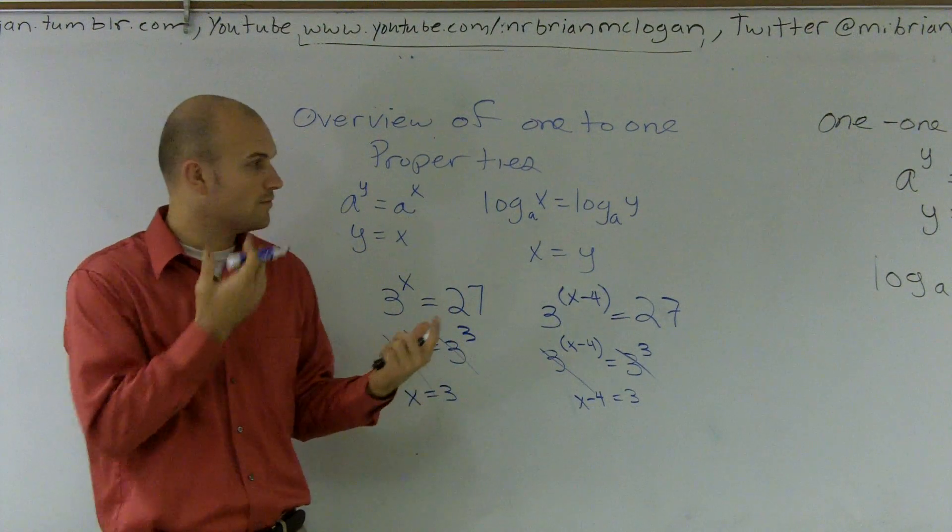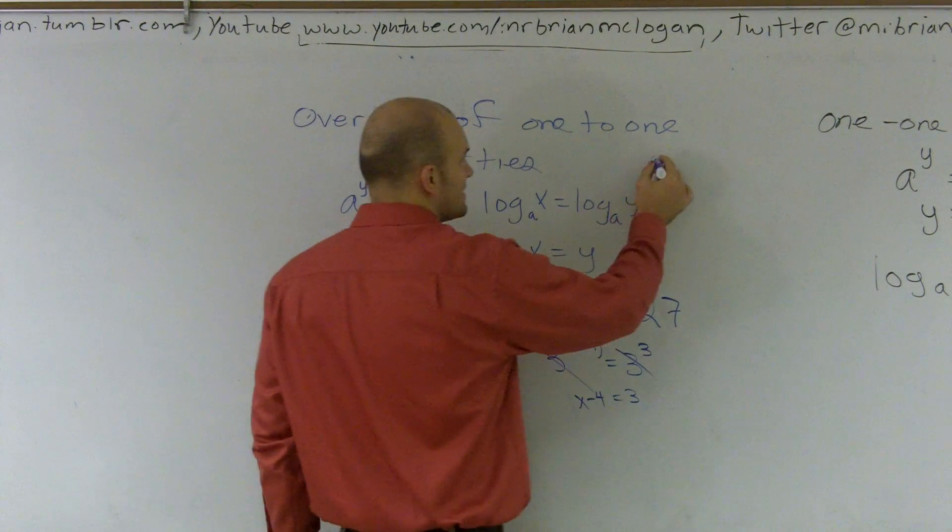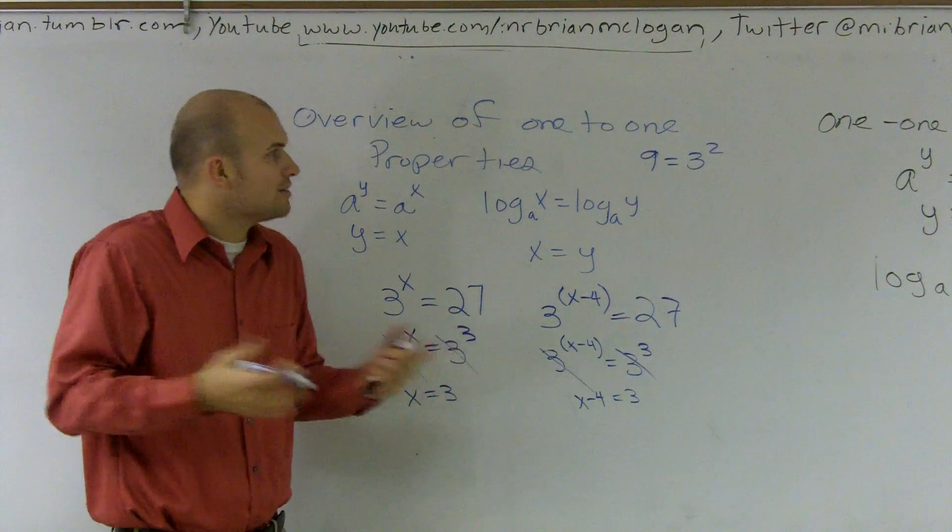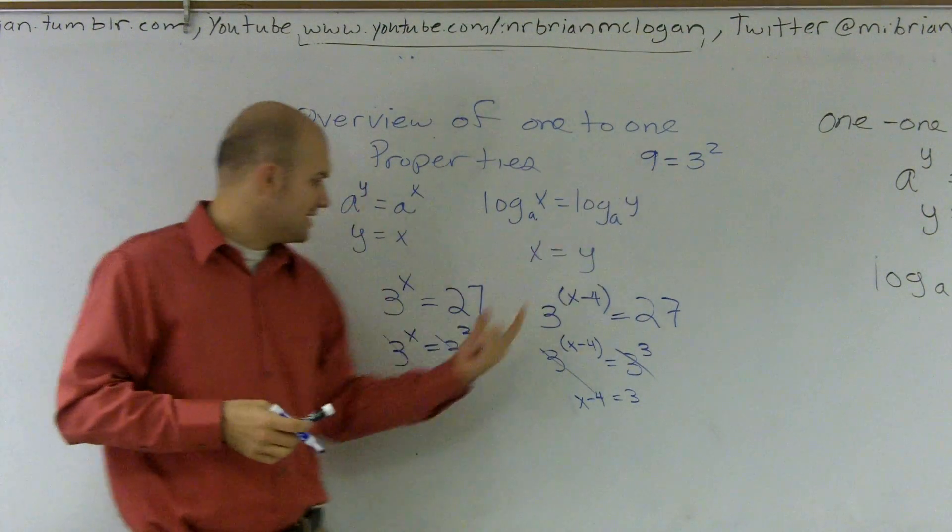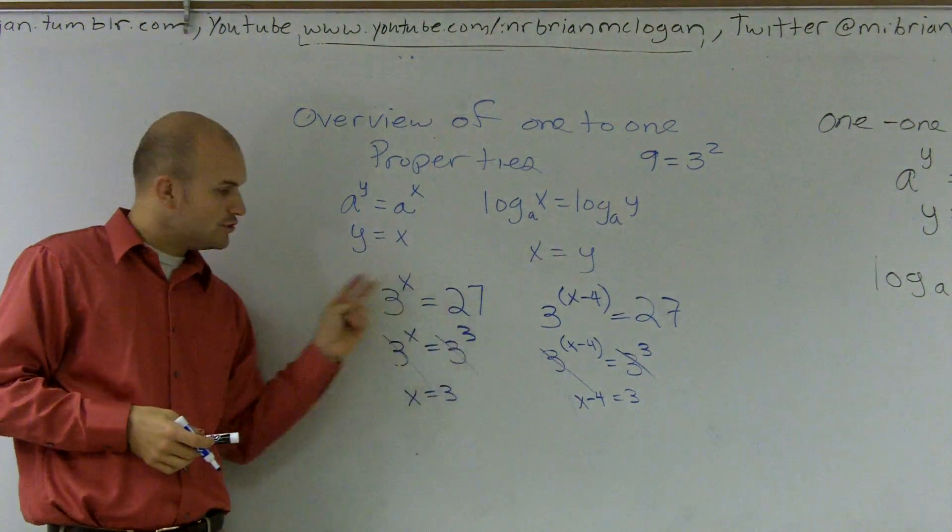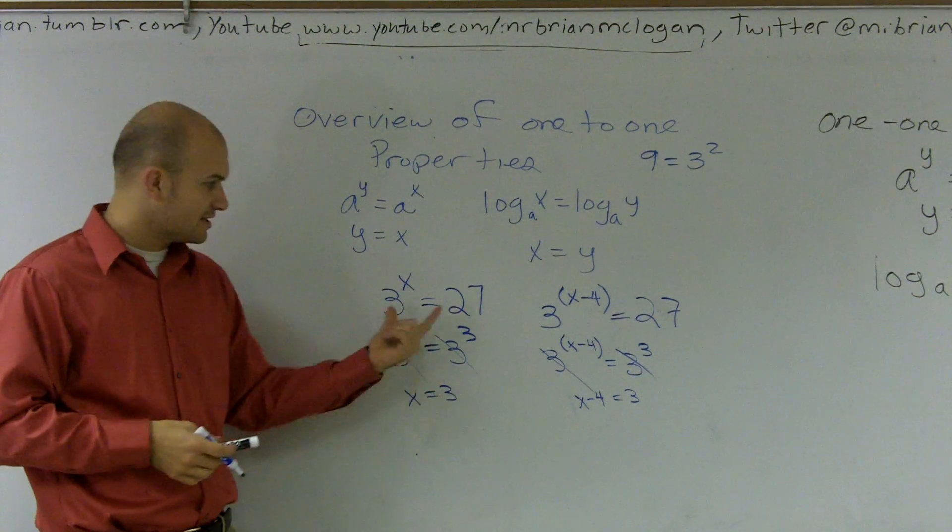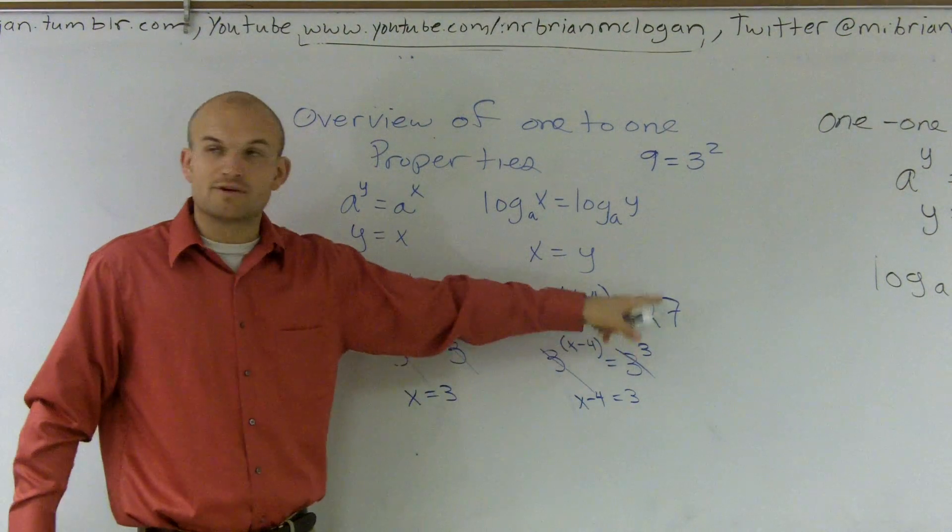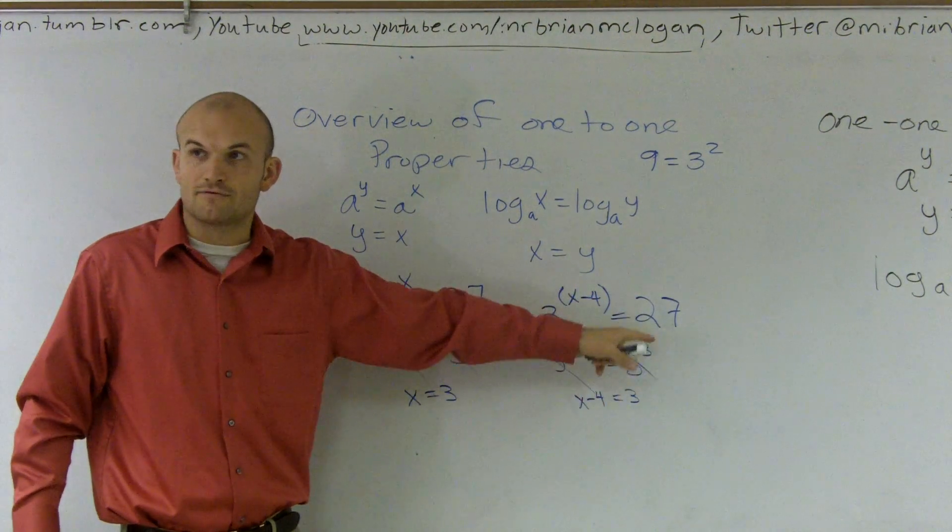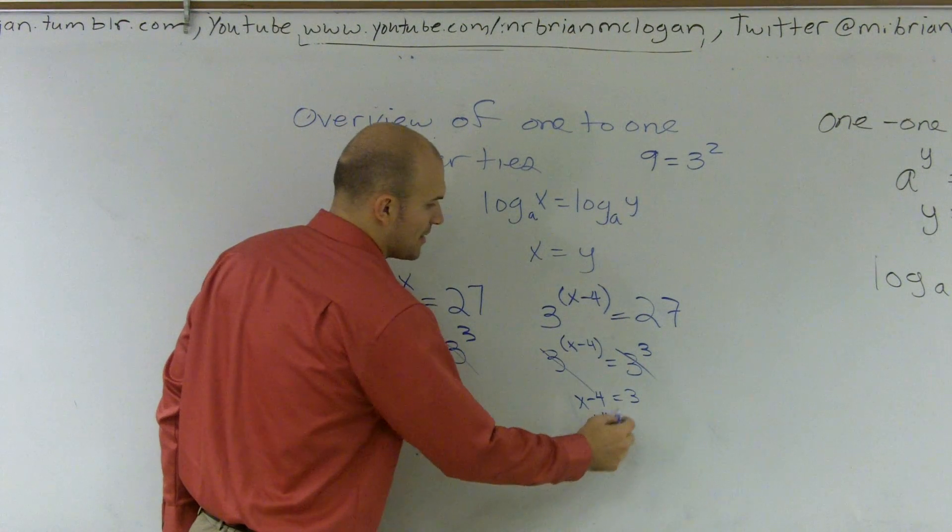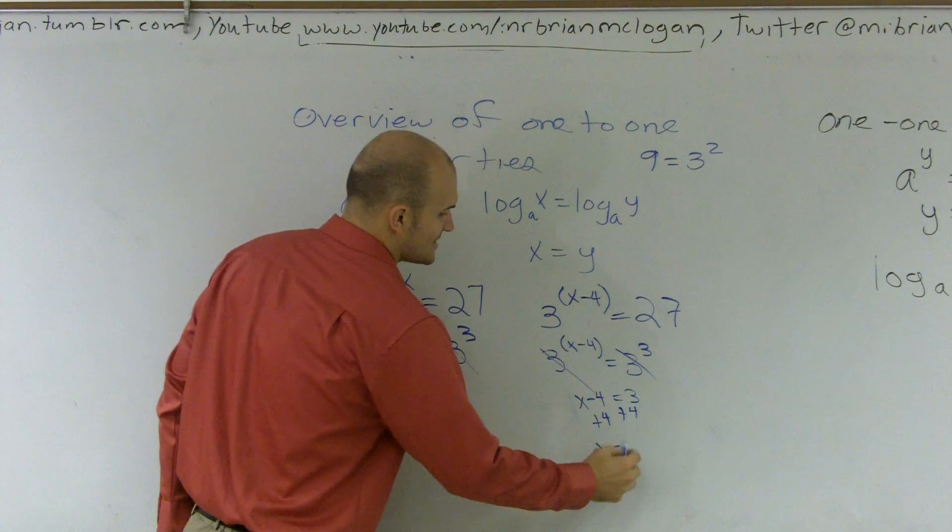You just need to understand that whenever you have a number, like nine, you can rewrite that as three squared, right? So that's all I'm doing. Now the reason why I'm rewriting it is because whenever you have the same base on the left side and the right side, you can cancel them out. So you always want to make sure you rewrite them as the same base, so I just rewrote 27 as the base three of three. When I cancel that, then I can just finish solving this problem. X equals seven.